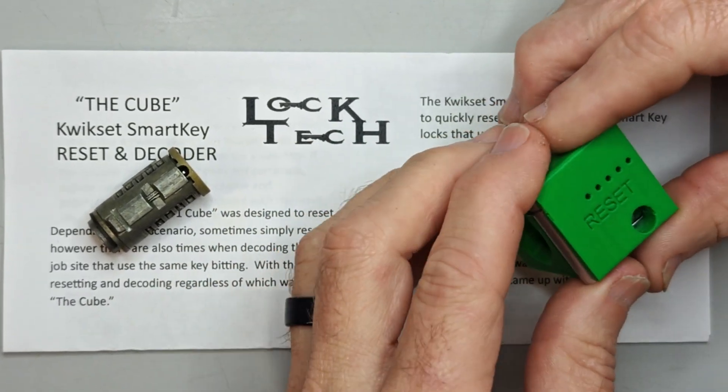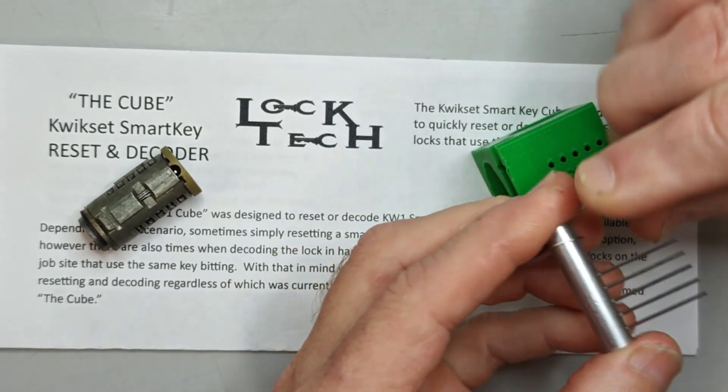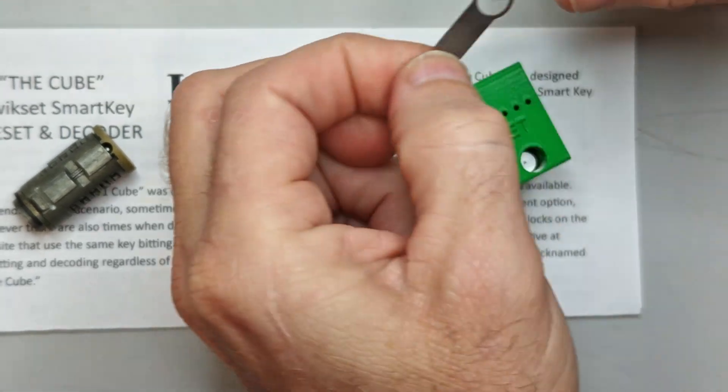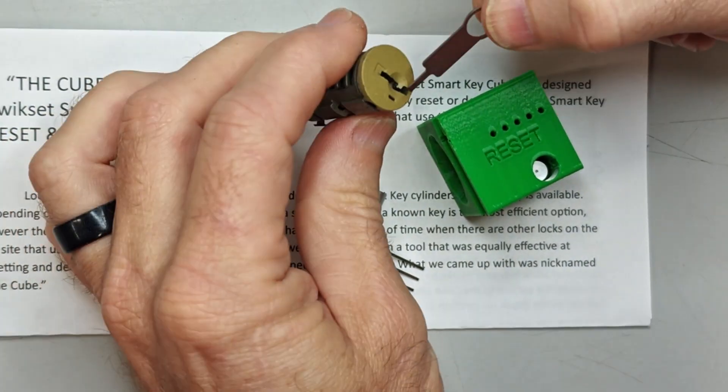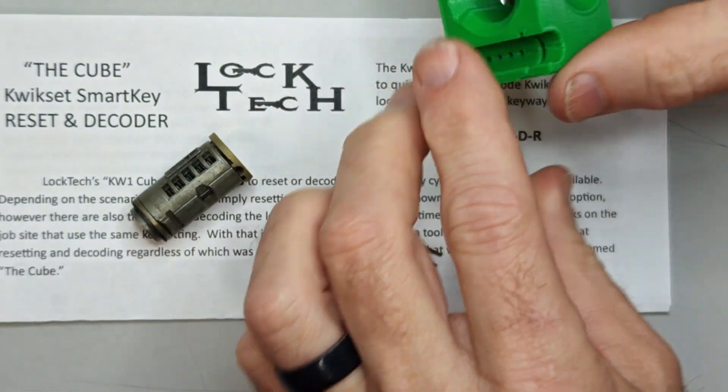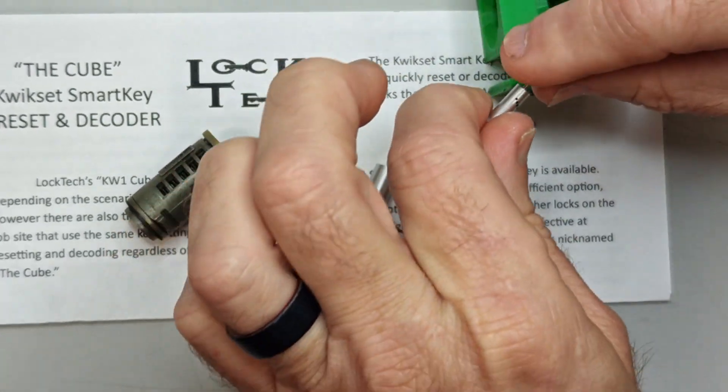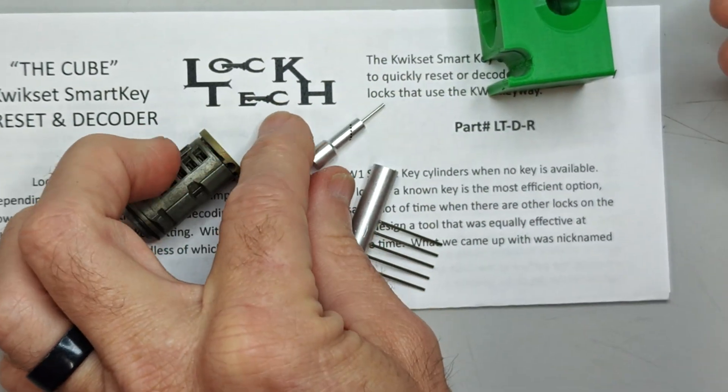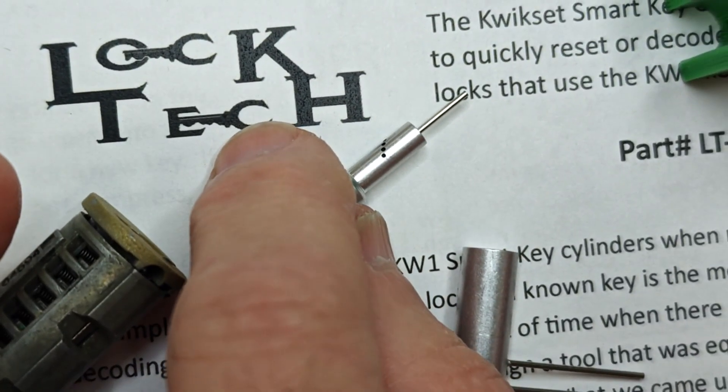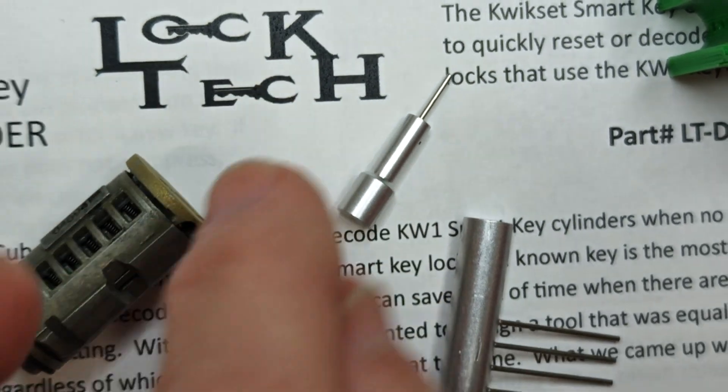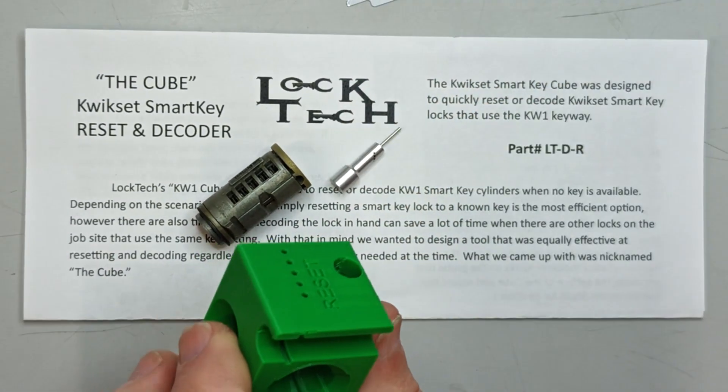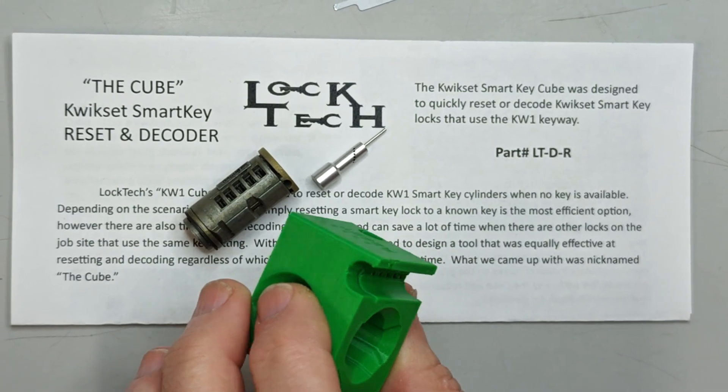So this consists of four parts. It's got a reset comb, the probe for resetting the cylinder once you have it turned to 90 degrees, and a decoder pin. As you can see on it, it's got six depths and we'll get to those shortly. If you're decoding it you'll use the decoder pin; if you're resetting it you'll use the reset comb.